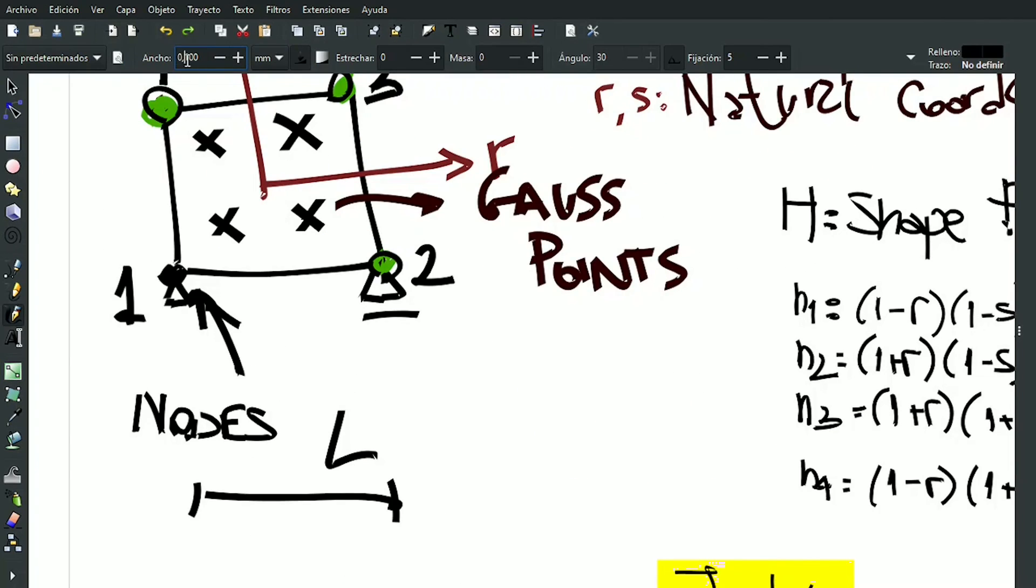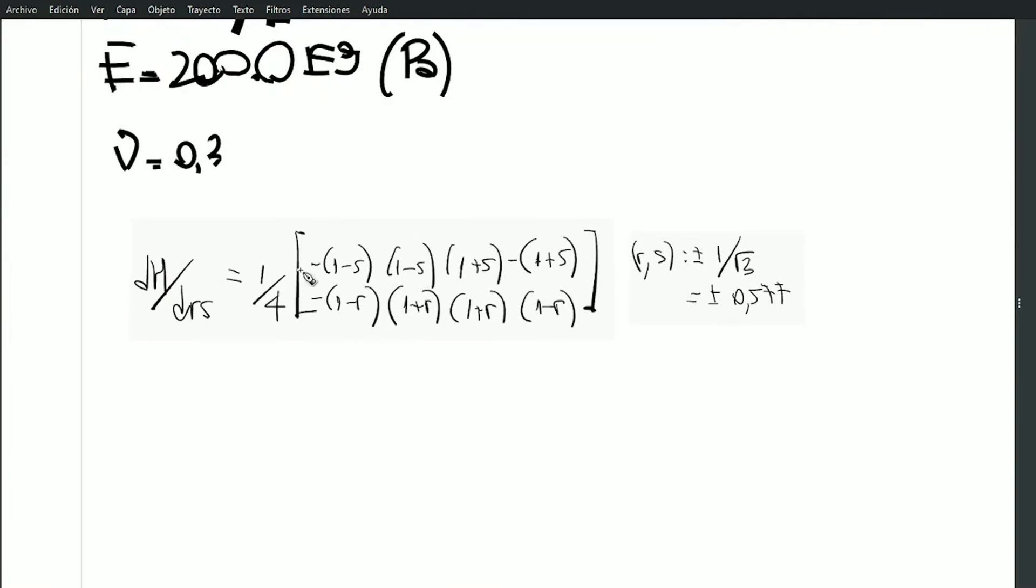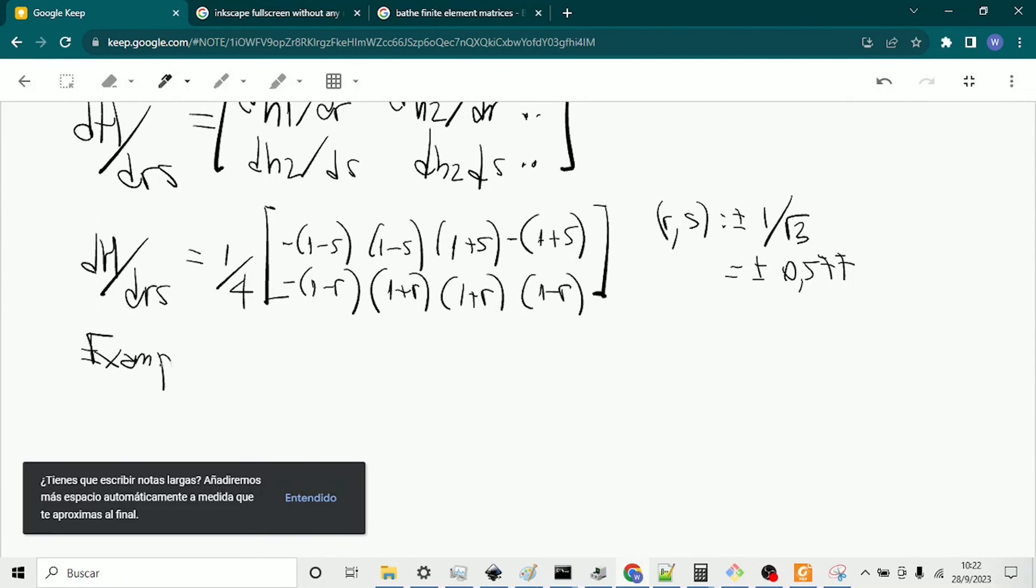According with Gauss integration rule of two points per direction. Finally, our global derivative matrix will be this multiplied by the Jacobian inverse.